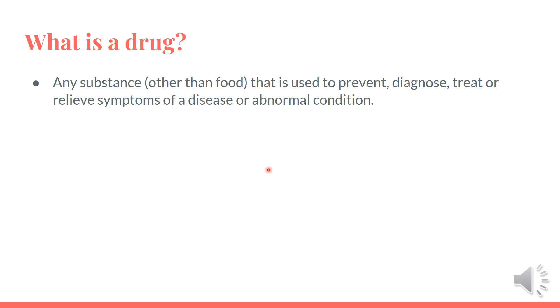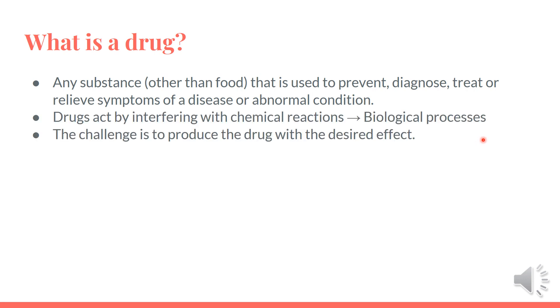What is a drug? A drug is any substance other than food that is used to prevent, diagnose, treat or relieve symptoms of a disease or abnormal condition. Drugs can also affect how the brain and the rest of the body works, and cause changes in mood, awareness, thoughts, feelings or behavior.